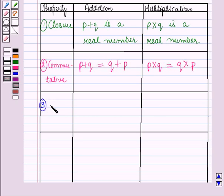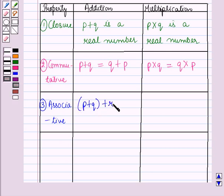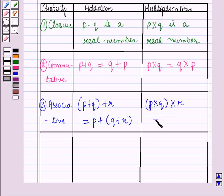The third property is the associative property. In case of addition, if p, q, and r are any three real numbers, then (p plus q) plus r is equal to p plus (q plus r). And in case of multiplication, it is (p into q) into r is equal to p into (q into r).